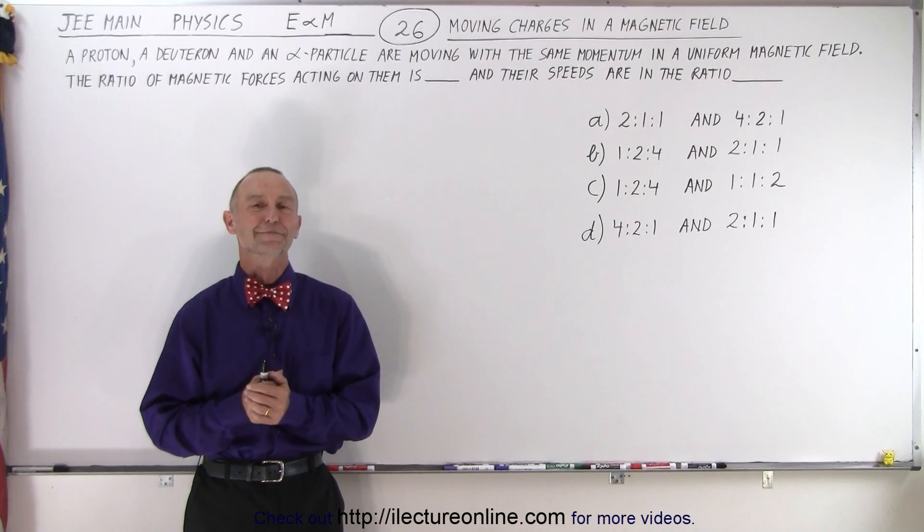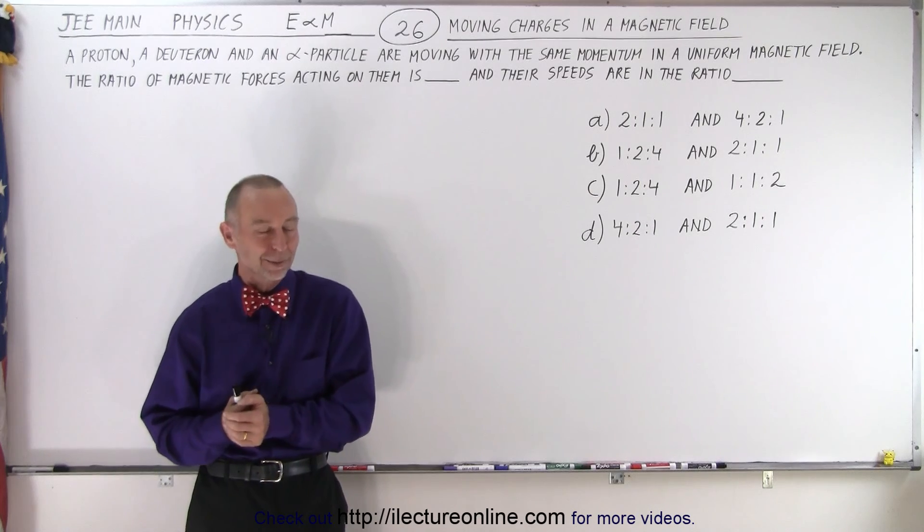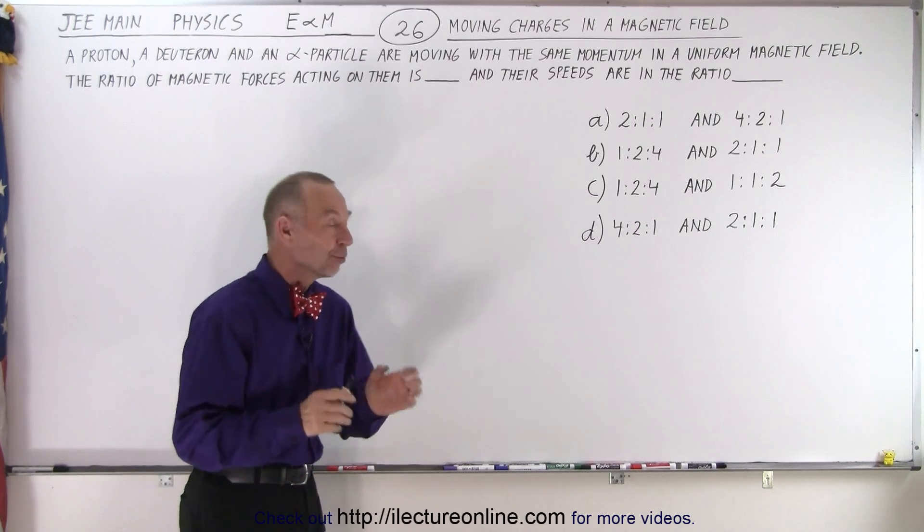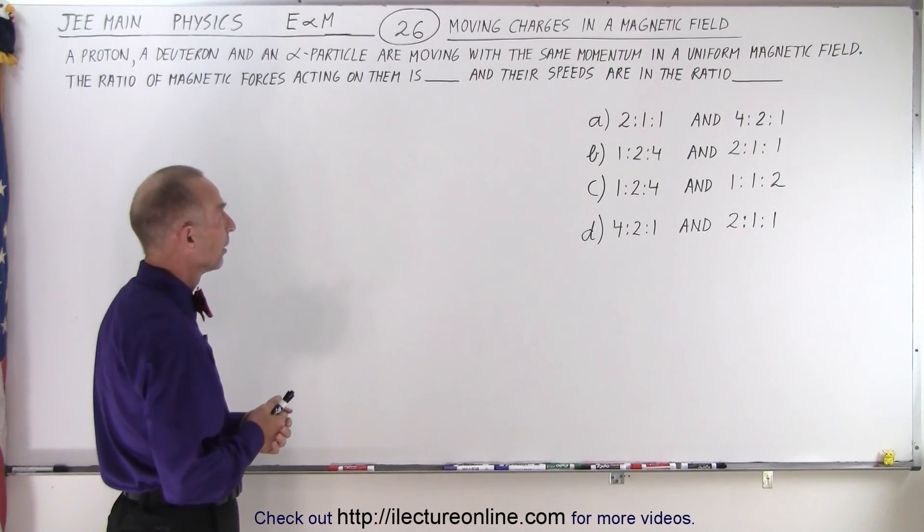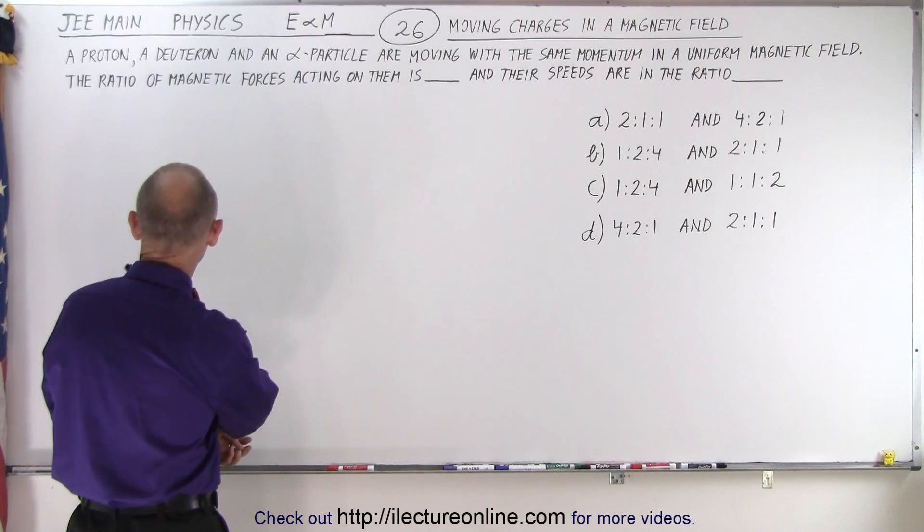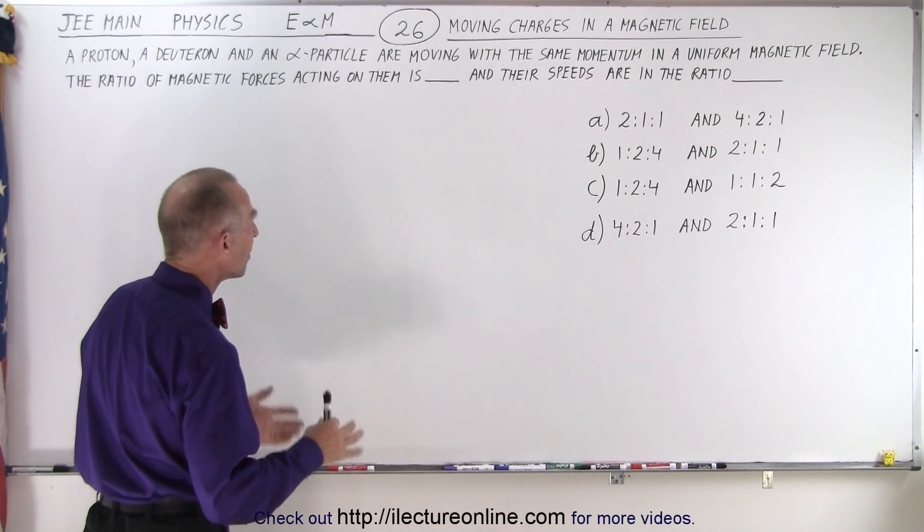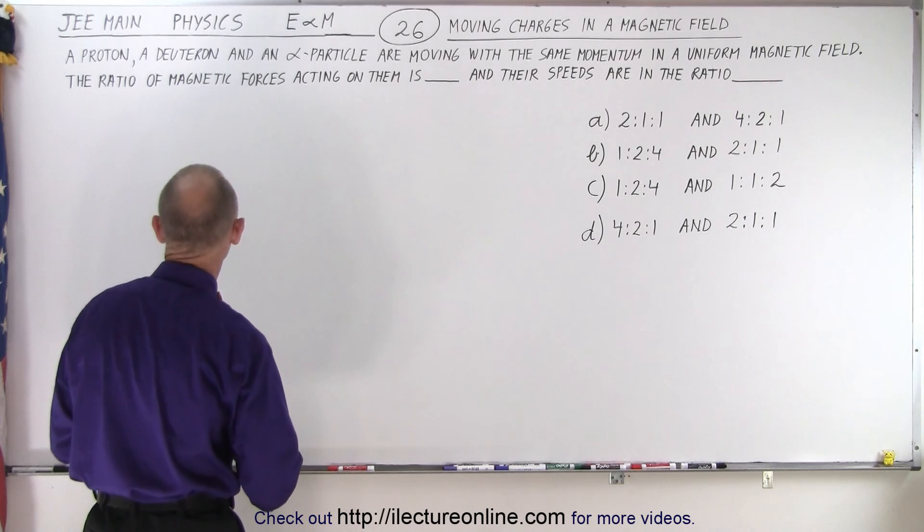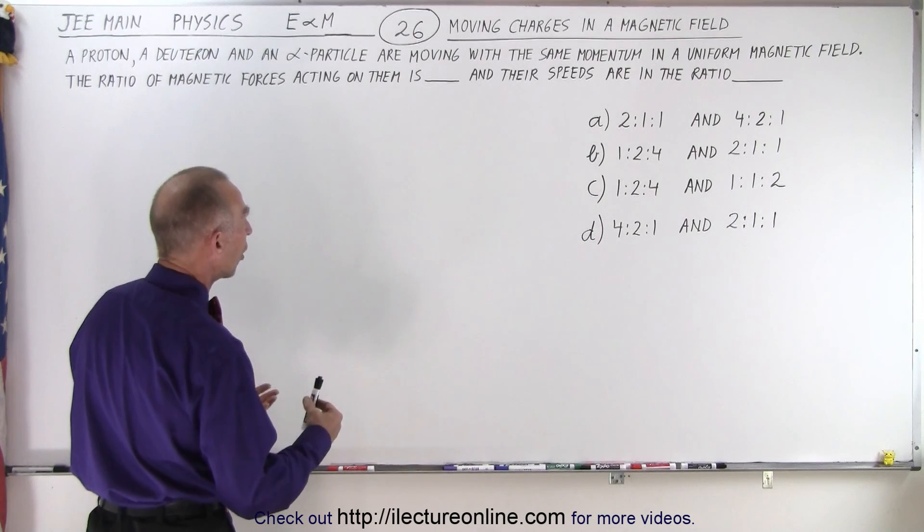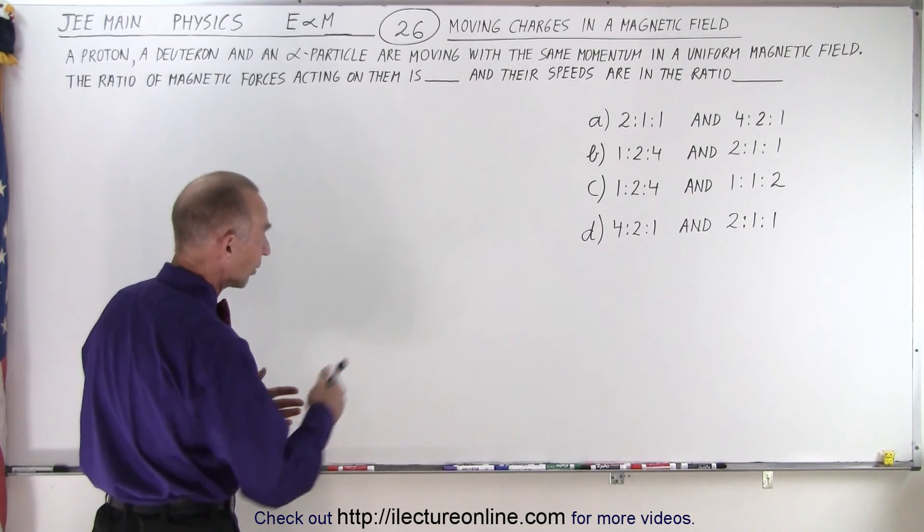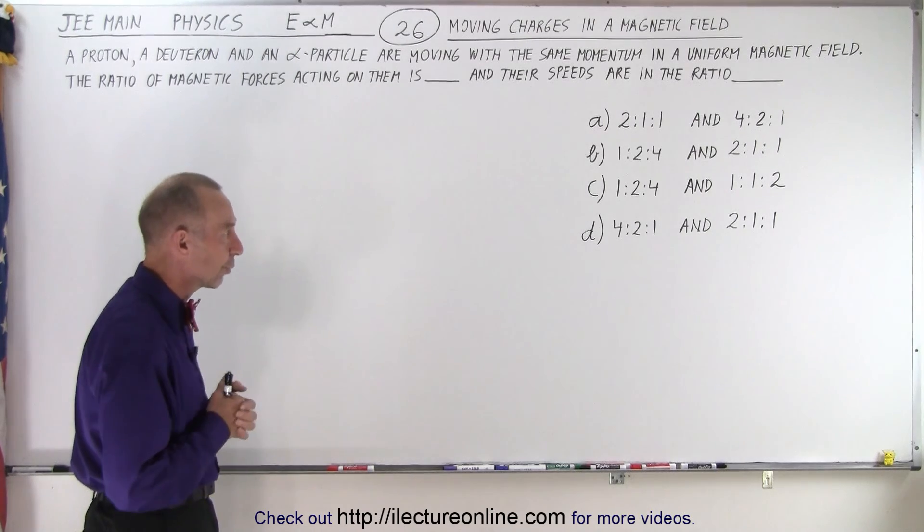Welcome to our lecture online. Here's another interesting problem from the JEE Main exams and it deals with small atomic particles moving at some speed through a magnetic field. Let's read the problem. It says a proton, a deuteron, and an alpha particle are moving with the same momentum in a uniform magnetic field. The ratio of magnetic forces acting on them is and their speeds are in the ratio as follows. And they give us four possible combination of answers. So which of those four answers are correct?